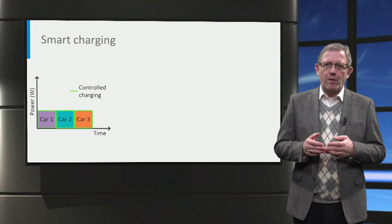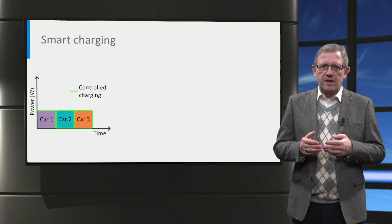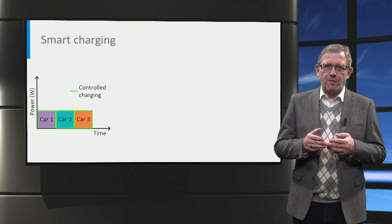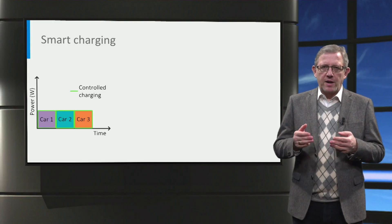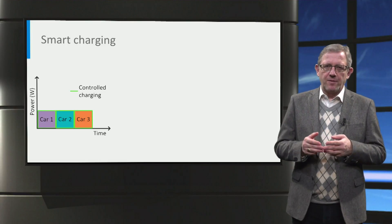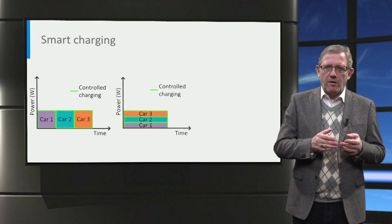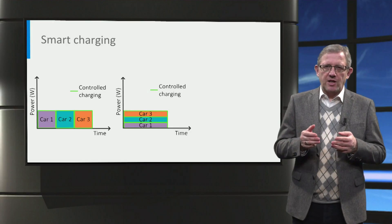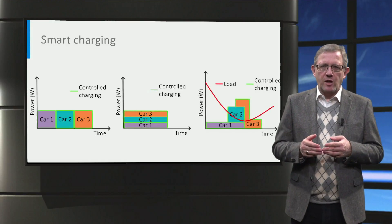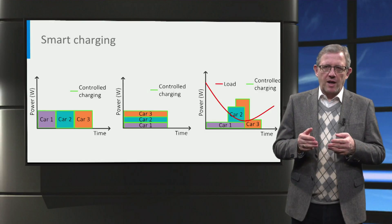Smart charging can help overcome these disadvantages. For example, if many cars are connected at the same time at the workplace, smart charging can help to plan and spread the charging power over the day. Here in this figure, one car is charged at a time sequentially. Alternatively, the cars can be charged at the same time but with a lower power for each car, such that the charging is spread over the 8 hours of work time. Or, the smart charging system can monitor the electricity network and charge more cars when there is less demand on the electricity network.